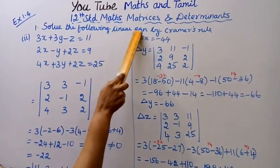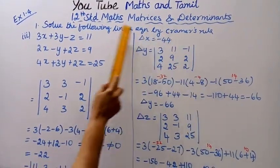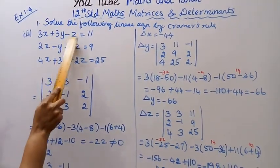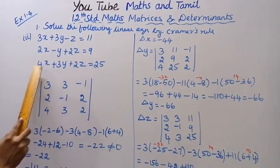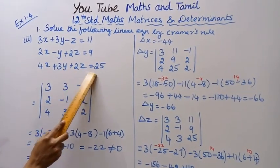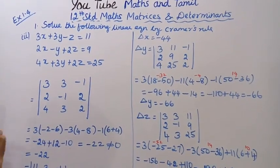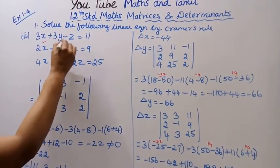Solve the following linear equation by Cramer's rule: 3 equations - 3x plus 3y minus z equal to 11, 2x minus y plus 2z equal to 9, 4x plus 3y plus 2z equal to 25. Unknown values are x, y, z.